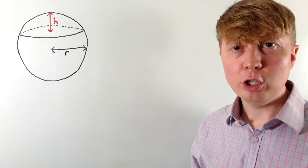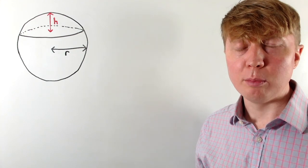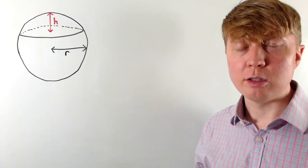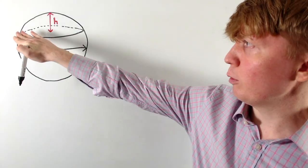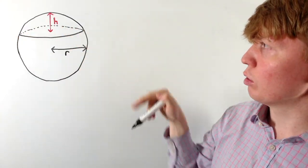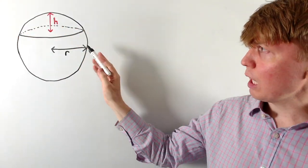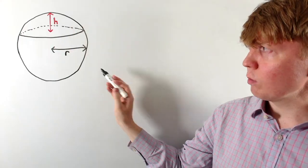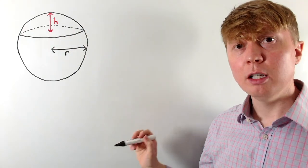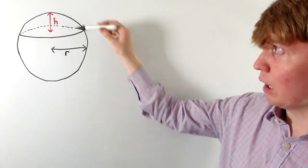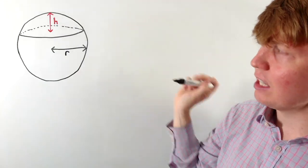We're going to calculate the volume of something called a spherical cap, which is the object obtained by taking a sphere and having a flat planar cut through it. We characterise this as: the sphere has radius r, and the spherical cap has a perpendicular height h.